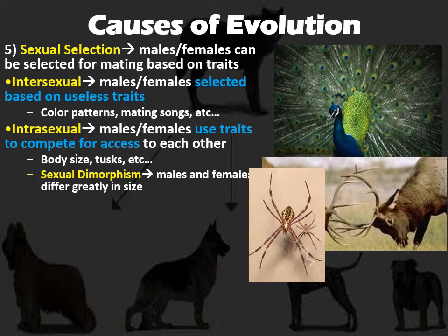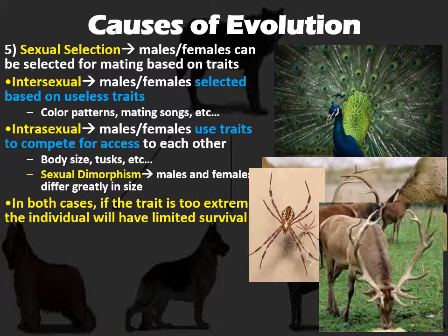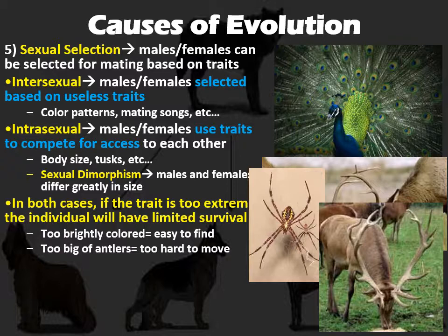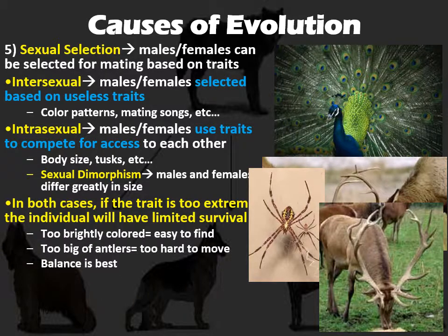Intrasexual selection leads to what we call sexual dimorphism — physical differences between males and females, typically differences in size or color patterns. A male lion versus a female lion: male lions are much larger than female lions — that's sexual dimorphism. Even in human beings, males are typically larger than females, another example. In both cases of sexual selection, if a trait becomes too extreme, it's going to limit the individual's survival rate, and therefore selection pressure limits it from getting that way. If you're too brightly colored you're easy to find and don't camouflage well. If your antlers are too big, it's hard to escape predators. You have to balance having that trait without such an extreme version that it inhibits your ability to survive.